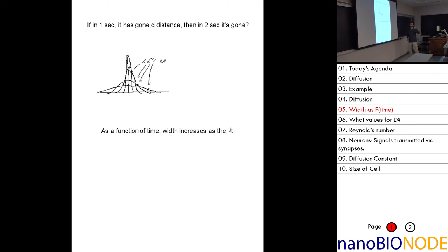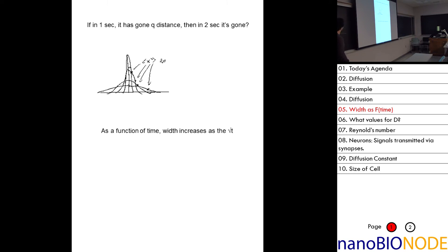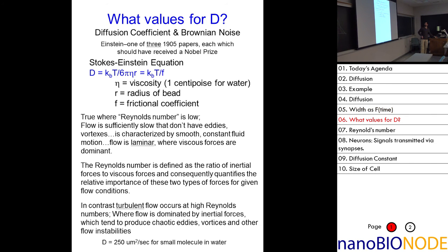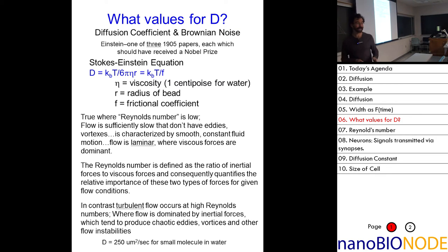This is a review of last time. Initially we put a drop of ink here and with time it broadens out — the width goes like the square root of time. We write x-squared equals some number times D times tau, where D is the diffusion constant.